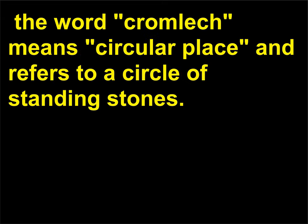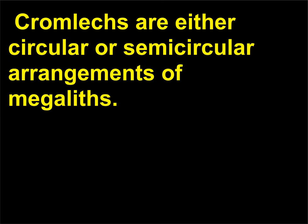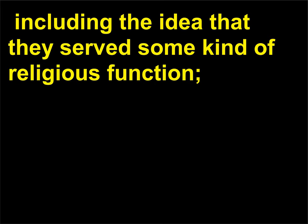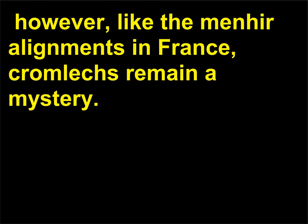The word 'cromlech' means 'circular place' and refers to a circle of standing stones. Cromlechs are either circular or semicircular arrangements of megaliths. There are many theories about the function of these large-scale Neolithic sites, including the idea that they served some kind of religious function. However, like the menhir alignments in France, cromlechs remain a mystery.